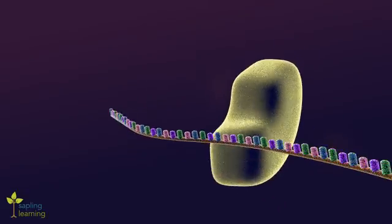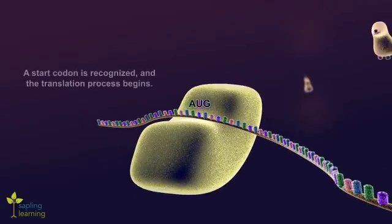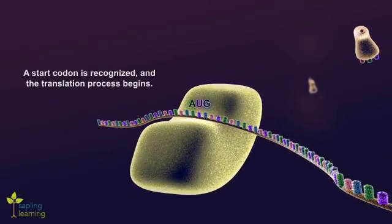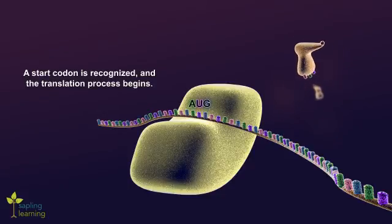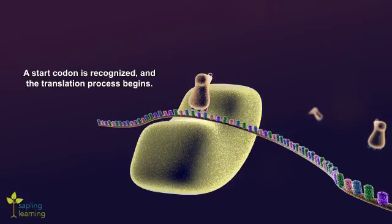A strand of mRNA travels from the nucleus to the cytoplasm. Some ribosomal subunits exist freely in the cytoplasm. The small ribosomal subunit binds to mRNA's start codon, AUG, triggering the start of translation. A tRNA with the anticodon for AUG bonds to the AUG codon on the mRNA strand.